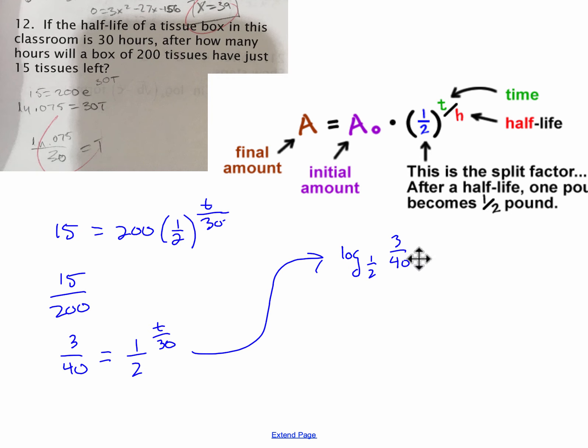And since we're going to use a calculator, if you don't want to simplify 15 over 200 to 3 over 40, you don't have to. It is going to equal T over 30, since we used a base of one-half. So then the time is going to equal 30 times the log base one-half of 3 over 40.